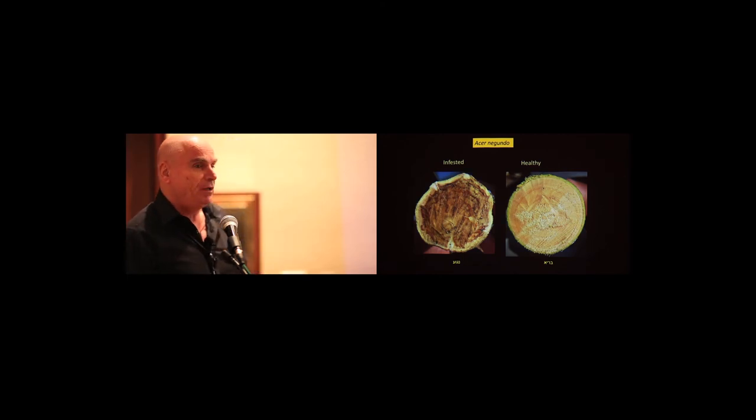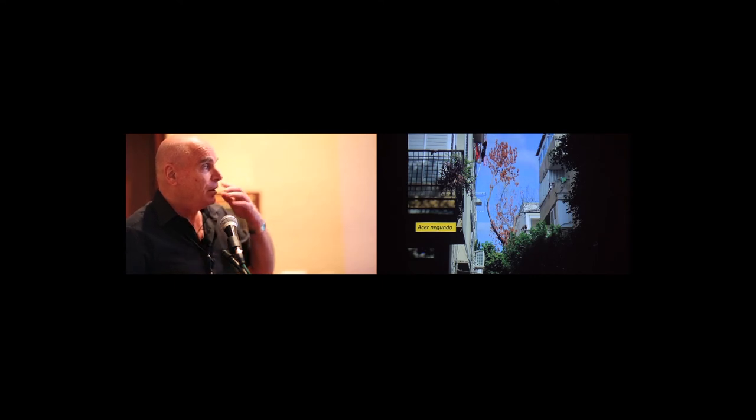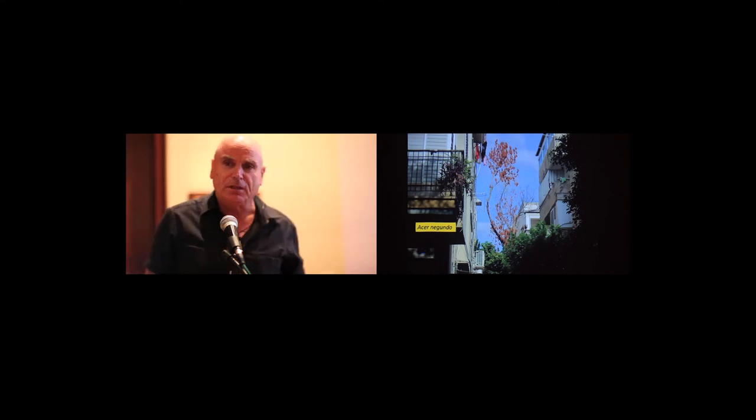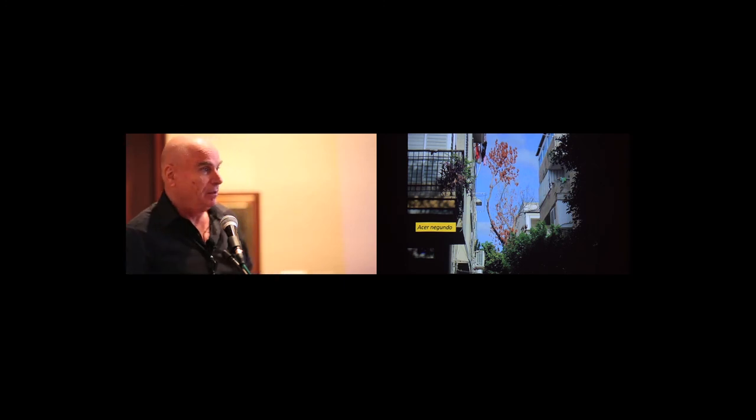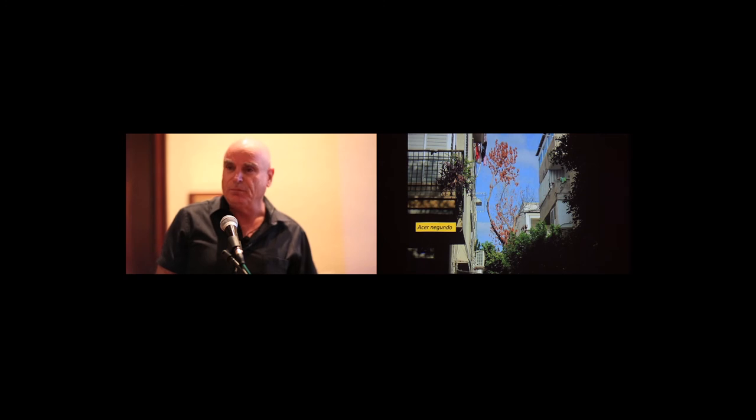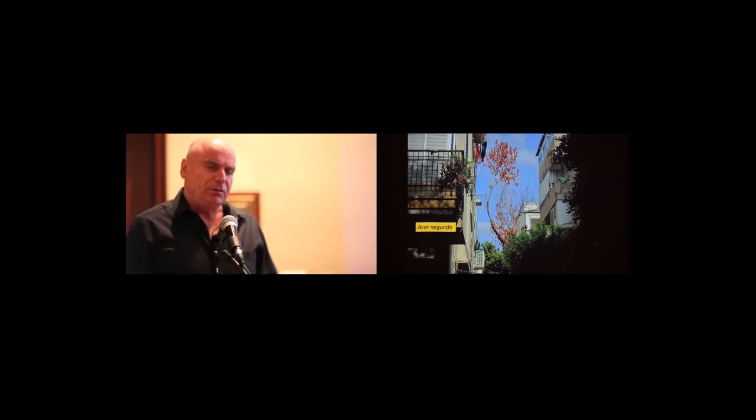Here you see the xylem of infested and healthy elder box. You can easily see the spread of the fungus inside, whereas the cortex remains rather clean. Elder box is extremely sensitive, and whenever it's infested by the beetle, the tree dies very soon. Here you see one of the specimens in Tel Aviv. Actually, all elder box in Tel Aviv were killed by the beetle. There are not very many of them, but the beetle managed to find each one of them.